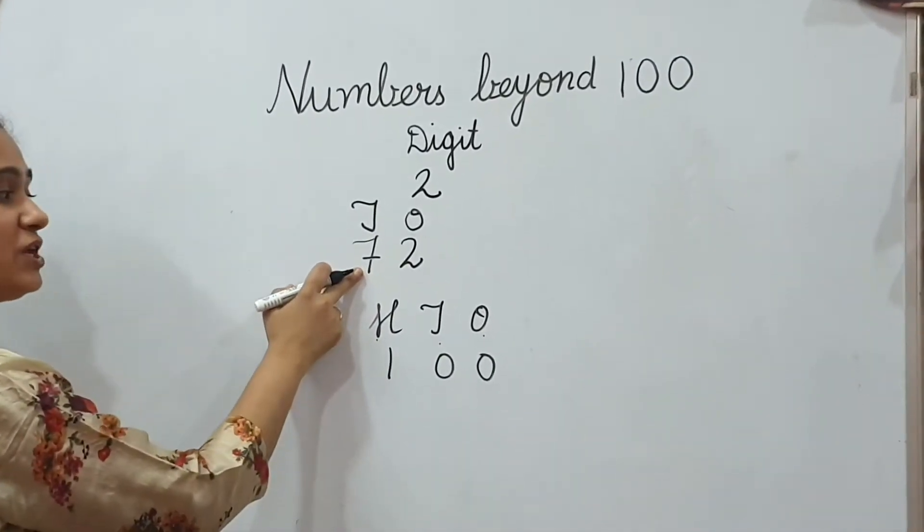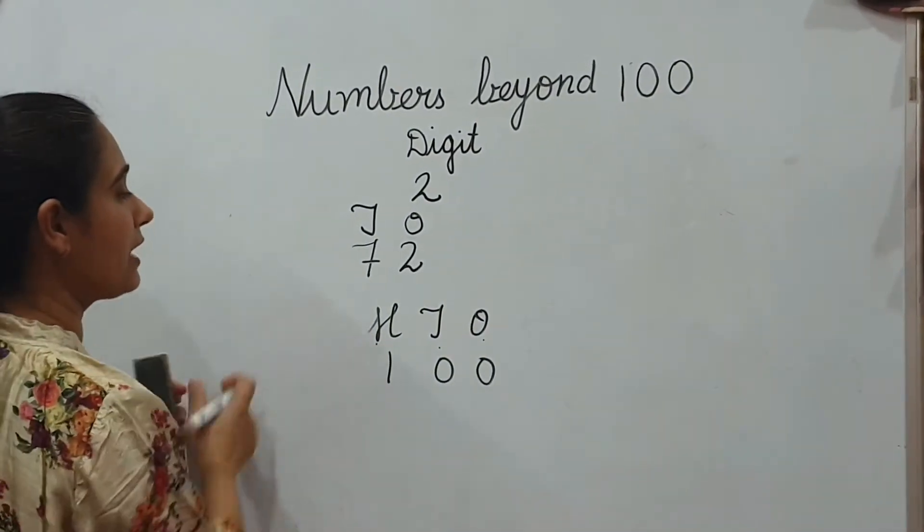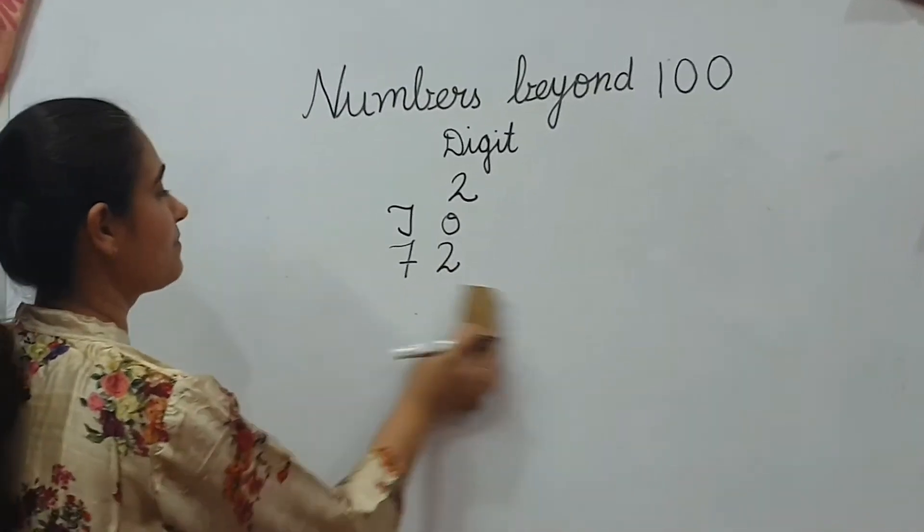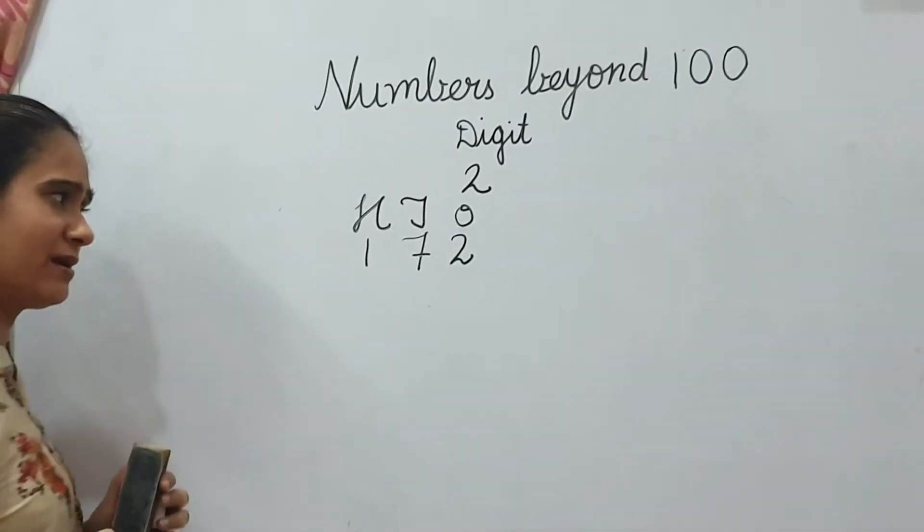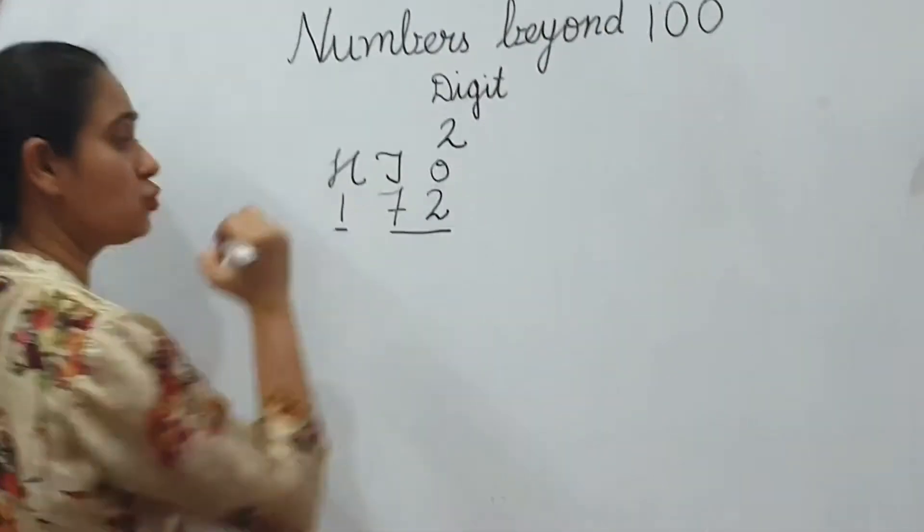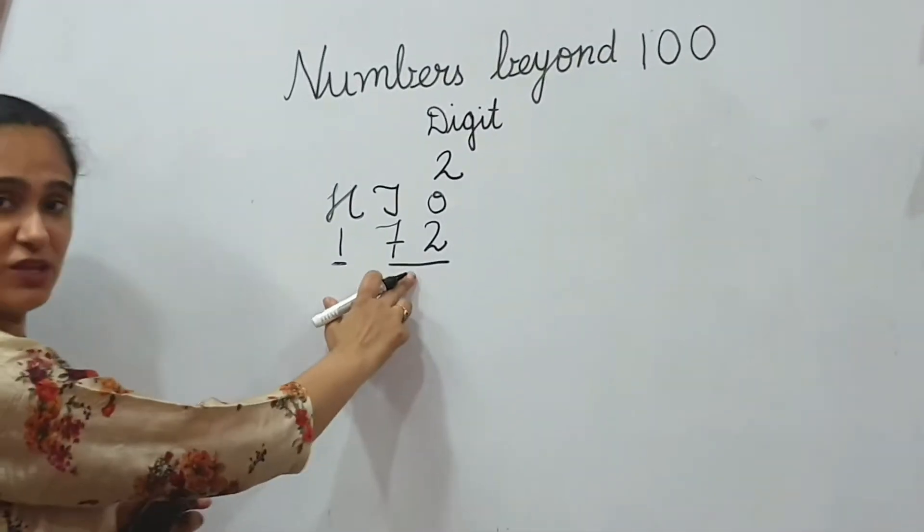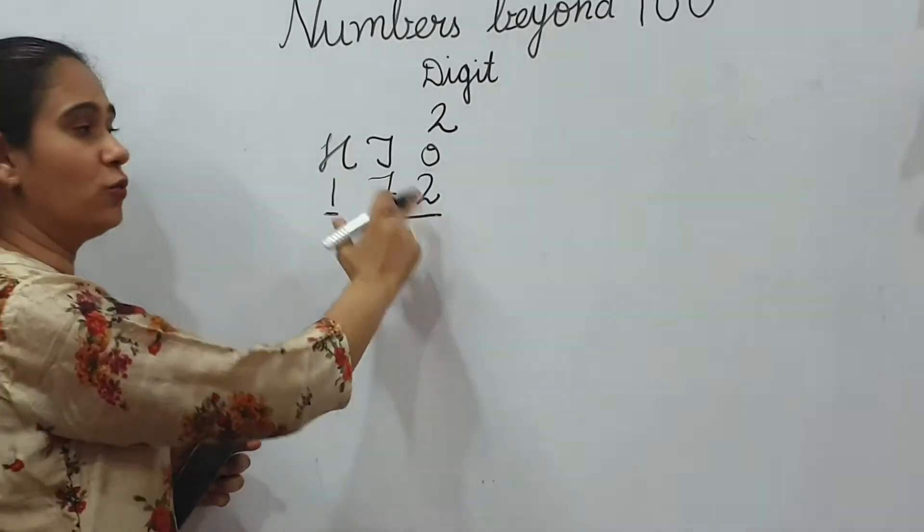Now, if I have written 72 here, I have written 72 here. If I will write H here, and I will write 1 here, what it will become? 172. 72, 172.